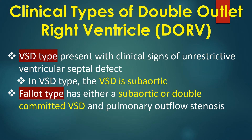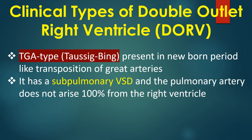VSD type presents with clinical signs of an unrestrictive ventricular septal defect, and the VSD is subaortic. Fallot type has either a subaortic or doubly committed VSD and pulmonary outflow stenosis.